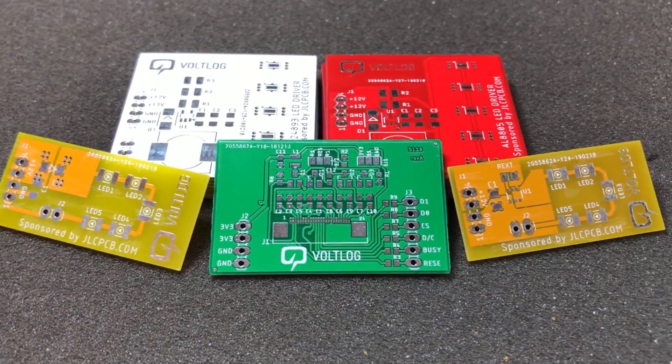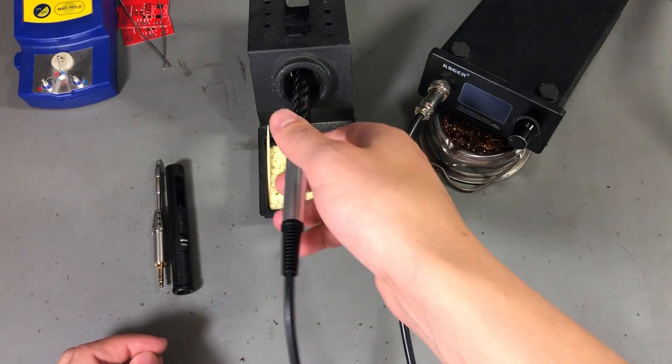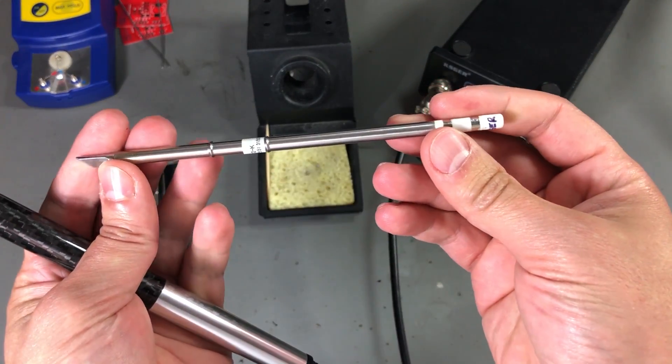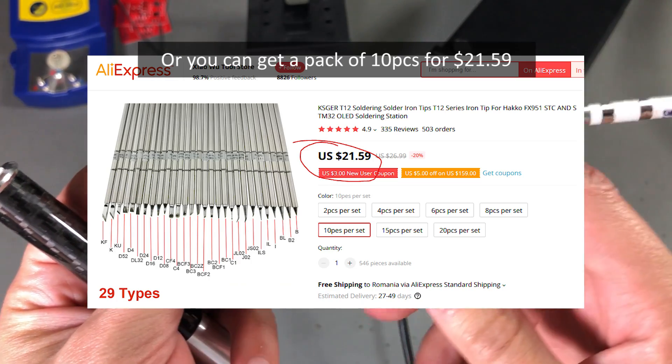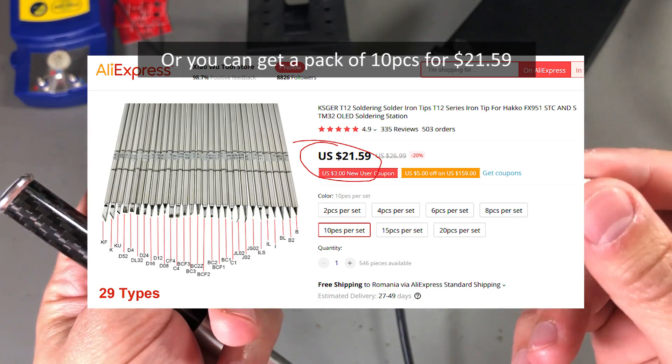It uses the well-known T12 tips which are widely available on AliExpress. For example, you can get one of these Kaysger T12 branded tips for about $3 a piece.